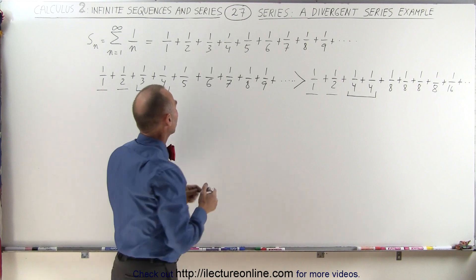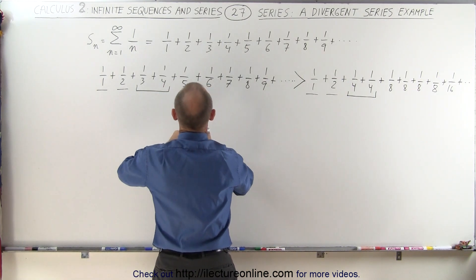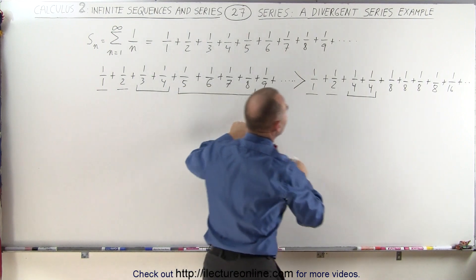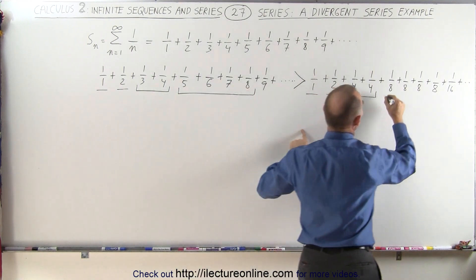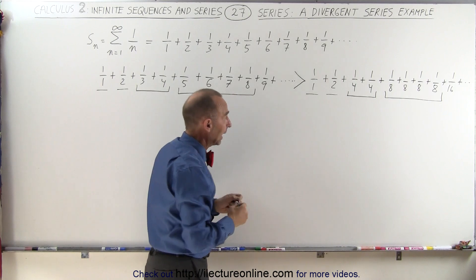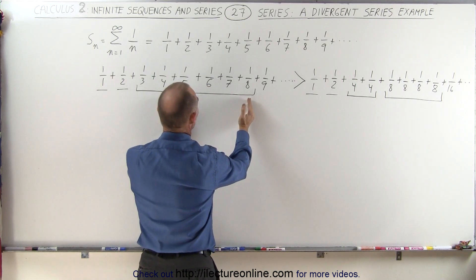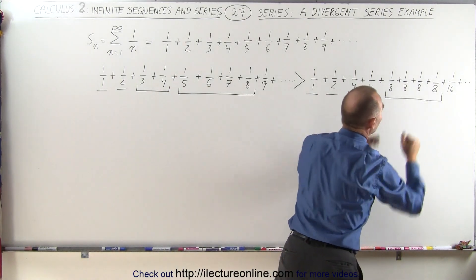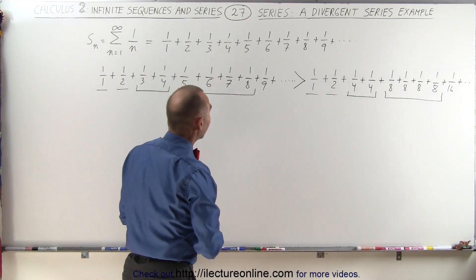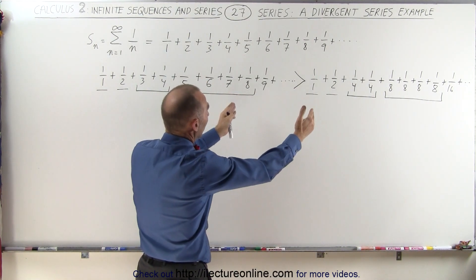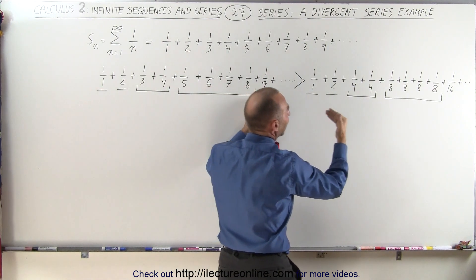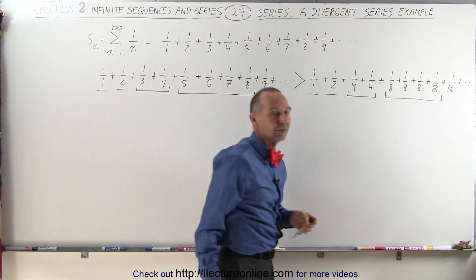Then the next four elements of this sum — 1 over 5 plus 1 over 6 plus 1 over 7 plus 1 over 8 — are replaced by four 1 over 8s added together. Again, I can say that these four must be smaller than those four when added together. Then I can take the next 8 terms, all the way from 1 over 9 to 1 over 16, and replace them by eight 1 over 16s.